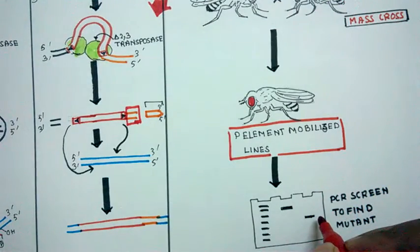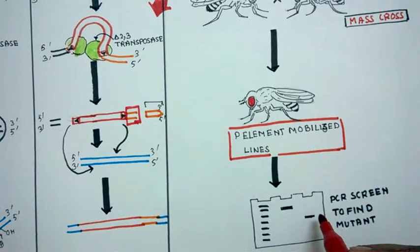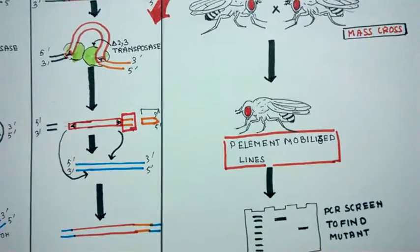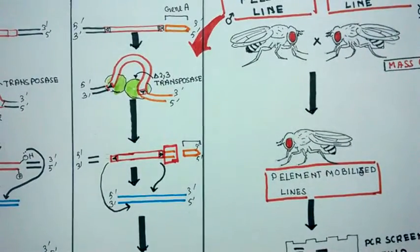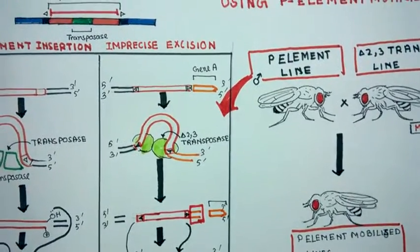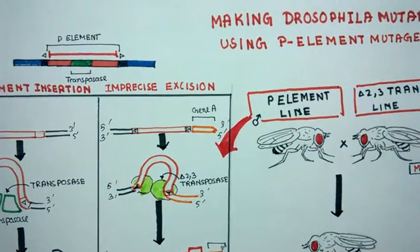If you want to learn more about how this PCR screening works, then I would make a different video on that. But for now, this concept would illustrate the basic mechanism of how this P-element mutagenesis system could be used to produce Drosophila mutant.